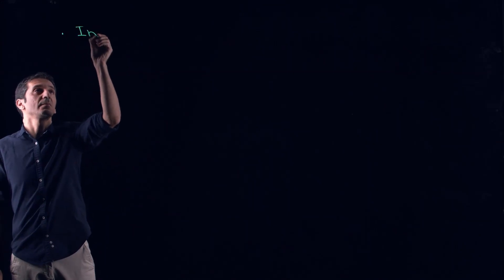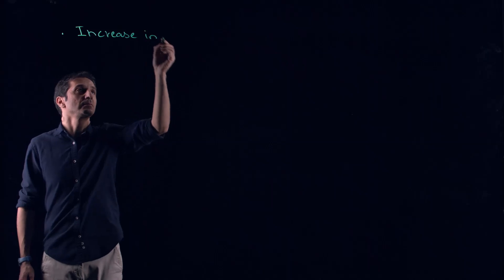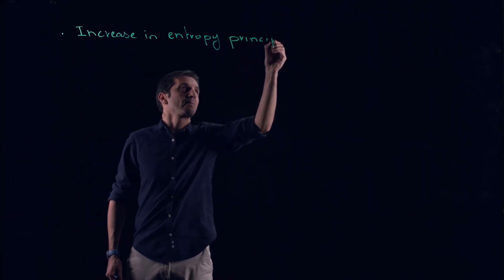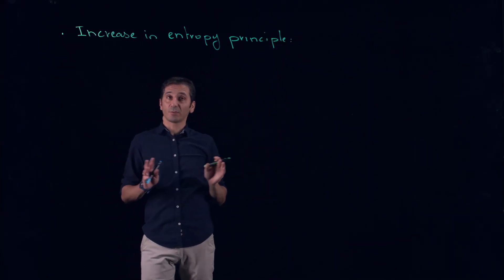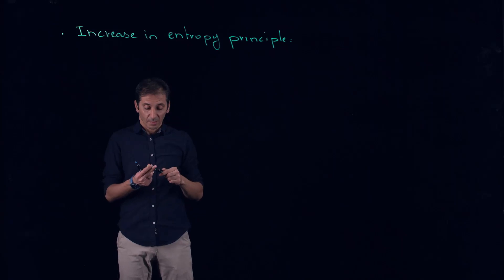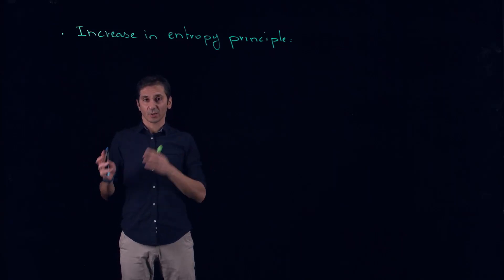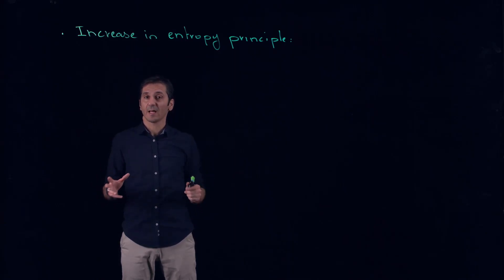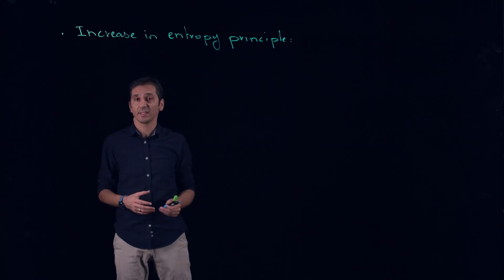Now we'll start discussing one of the most celebrated principles in physics: the increasing entropy principle. Before we start, remember that when we started the chapter on the second law of thermodynamics, our point was that some processes and cycles, although they fulfill the first law of thermodynamics, we don't see them happening around us. This is why there was a need for a second law of thermodynamics.